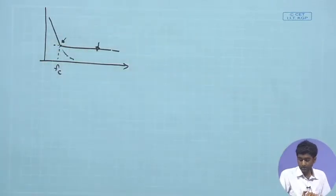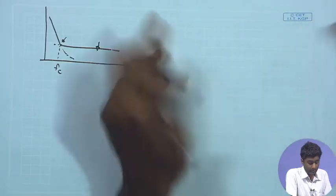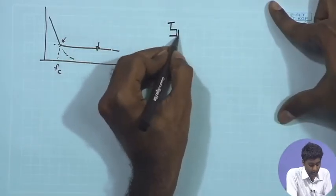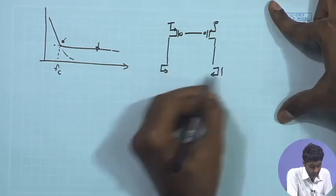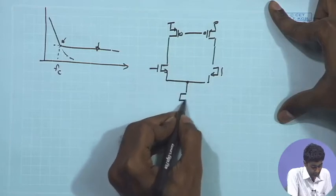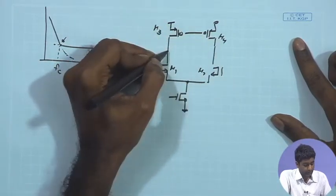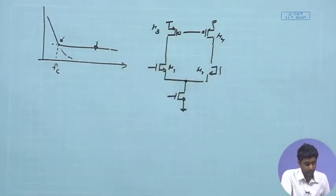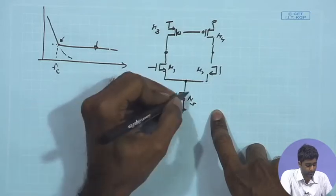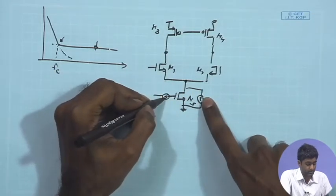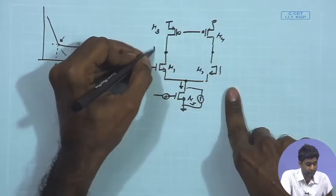Looking at the differential amplifier, we consider the differential half circuit, which is the same as the active load circuit we analyzed. For the common mode, we also have the tail current source transistor. For the differential case, the tail current source is at AC ground, so it contributes no noise. For common mode, this transistor produces an equivalent noise current flowing through the drain of M5.